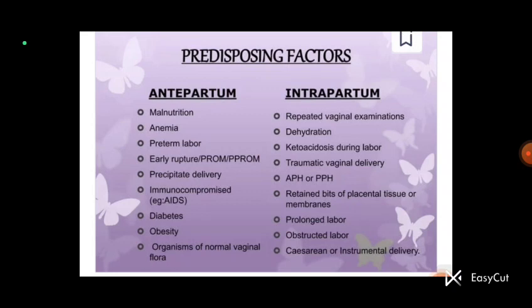Keto-acidosis during labor is also a risk factor. Additionally, if vaginal delivery was traumatic or involved instruments being inserted causing rupture, that can cause sepsis. Antepartum hemorrhage (APH) and postpartum hemorrhage (PPH) are also risk factors that can lead to sepsis.